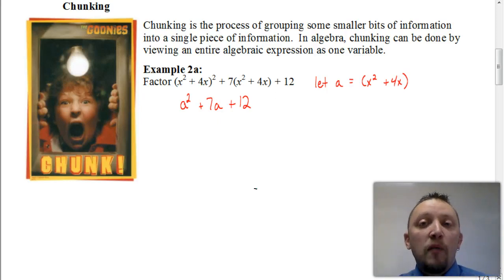And now that looks a lot more manageable to factor. We're going to factor down that a² + 7a + 12 as far as we can. And once I get it to where I can't factor it anymore, I'm going to replace the a's again with x² + 4x and see if that allows me to factor out even more.